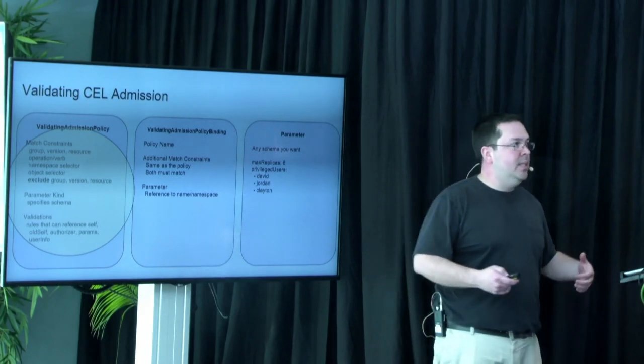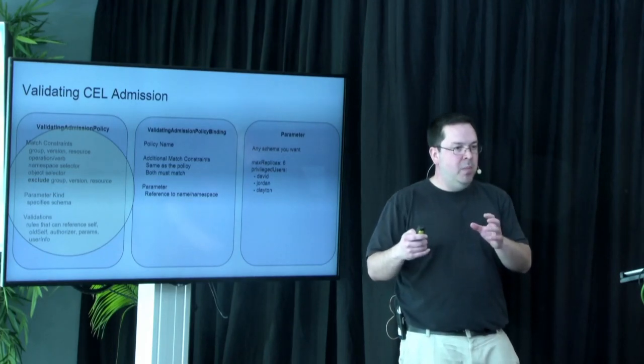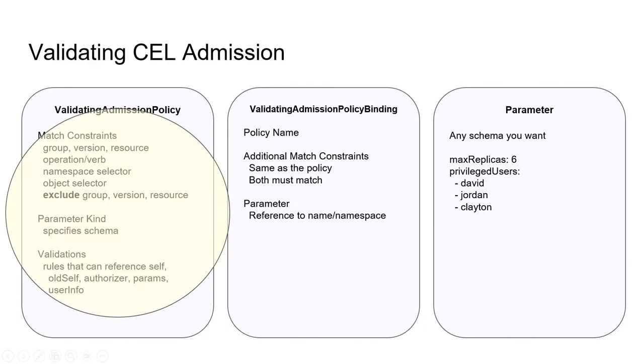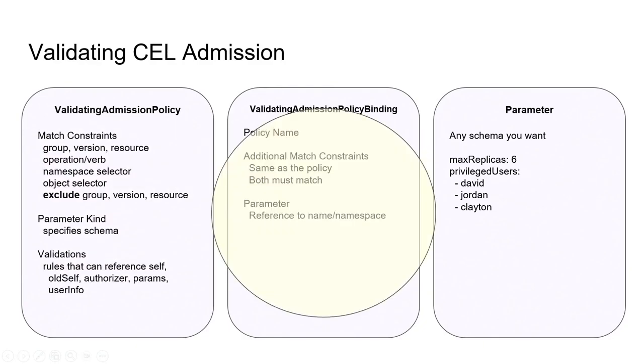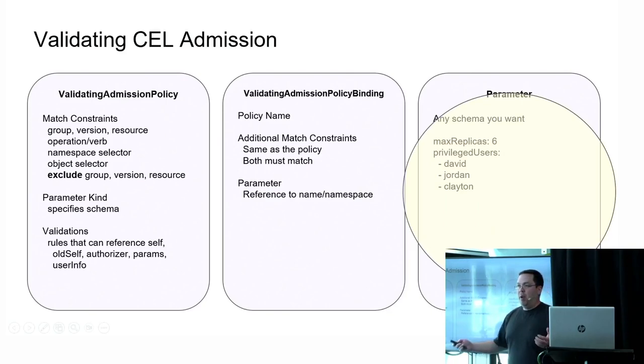That makes availability a lot easier to guarantee. Starting on the left, we have validating admission policy, where you might write I have an expression or this field, and it must be less than some value that a cluster admin might want to set. Then to actually use it, a cluster admin will create a binding. The reason you might want to create a binding is it gives you another secondary spot to filter by namespace or by resource. Maybe you have a preexisting cluster and want to enforce something new, but don't want to instantly break everything. And that's what the binding allows you to do. Finally, you have a parameter. It lets you set a value where you might say my max replicas is six.